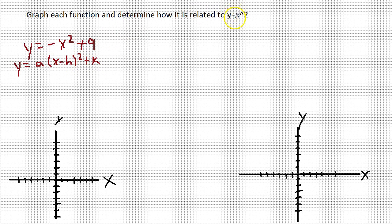We could say y equals, which vertex form is, a times the quantity x minus h squared plus k. So how is this related to y equals x squared? Well, because k is 9, let's see our a is negative 1, and h is 0 because there's nothing in parenthesis. k is 9.